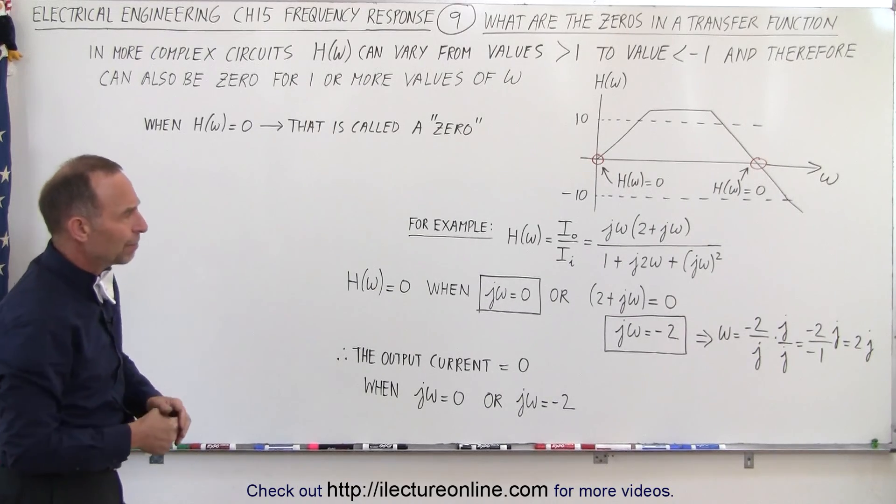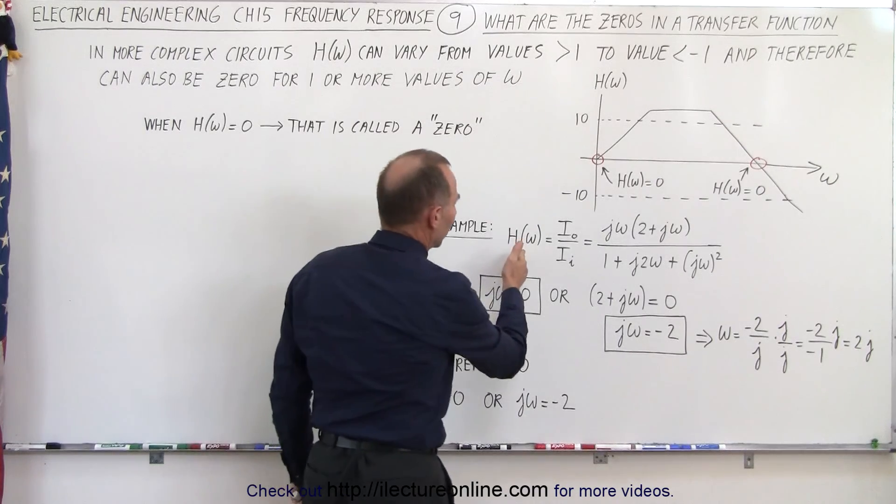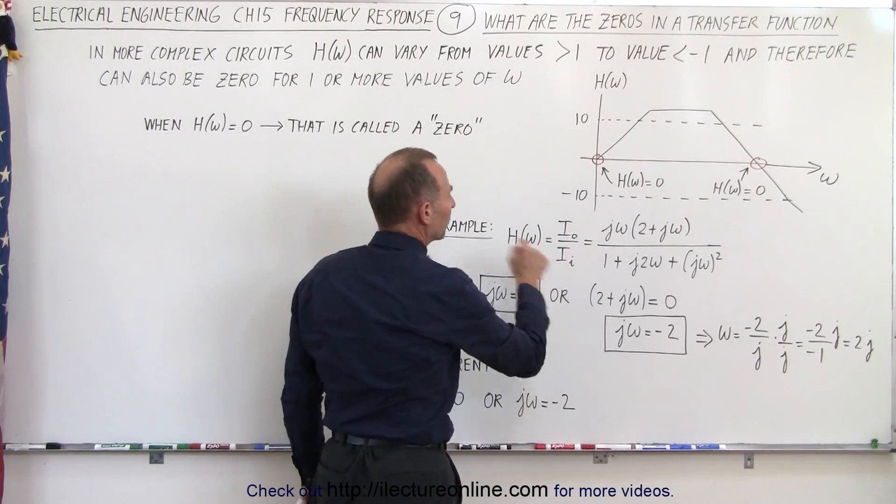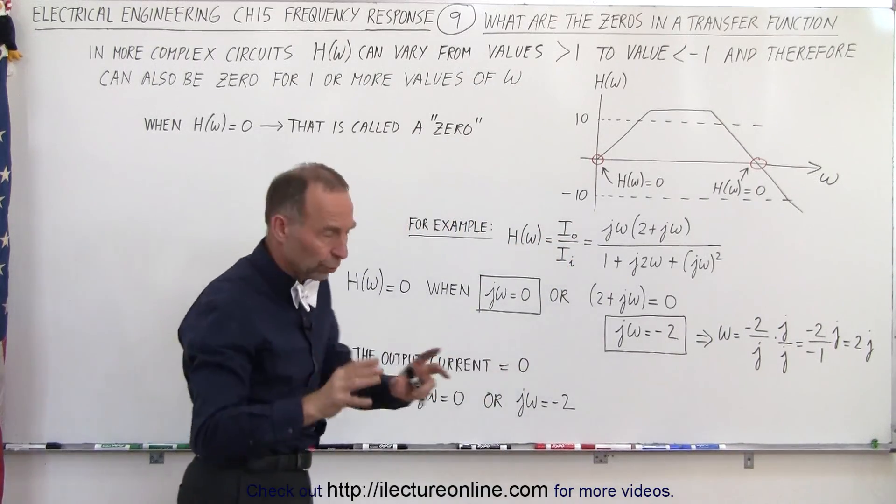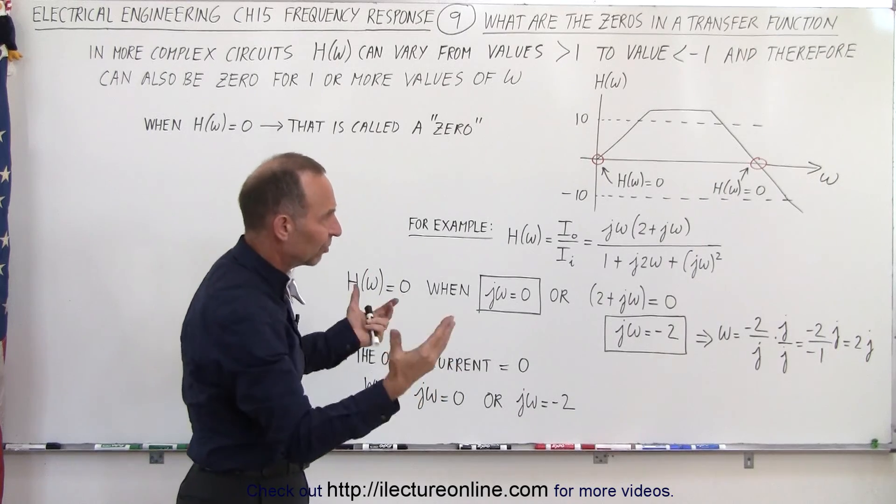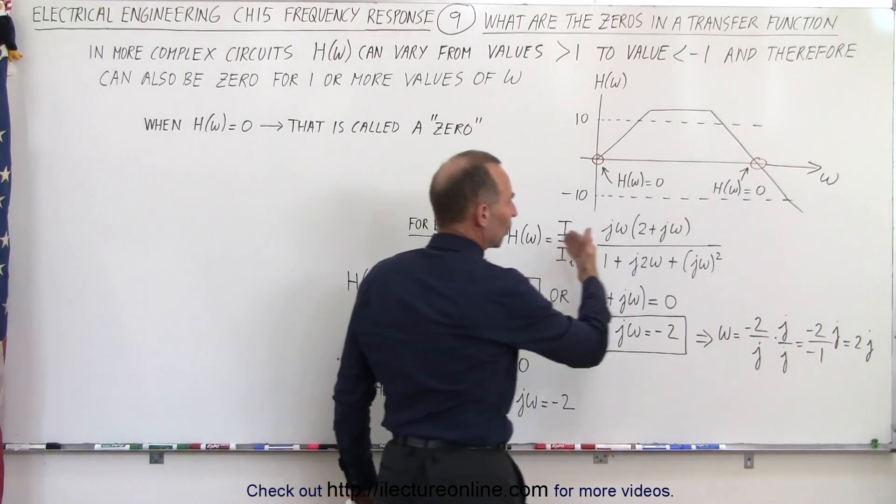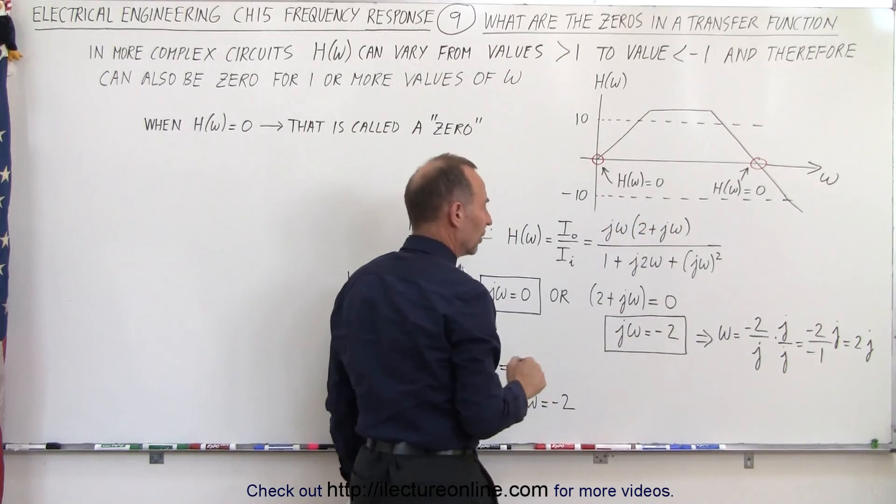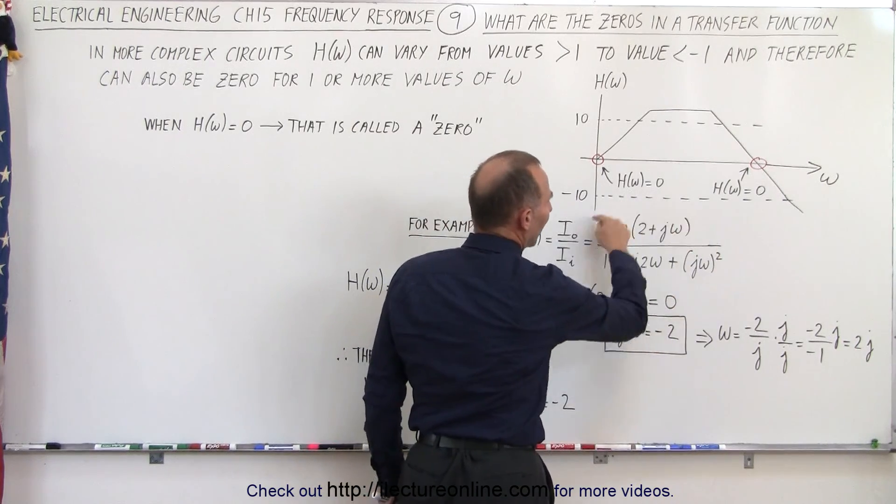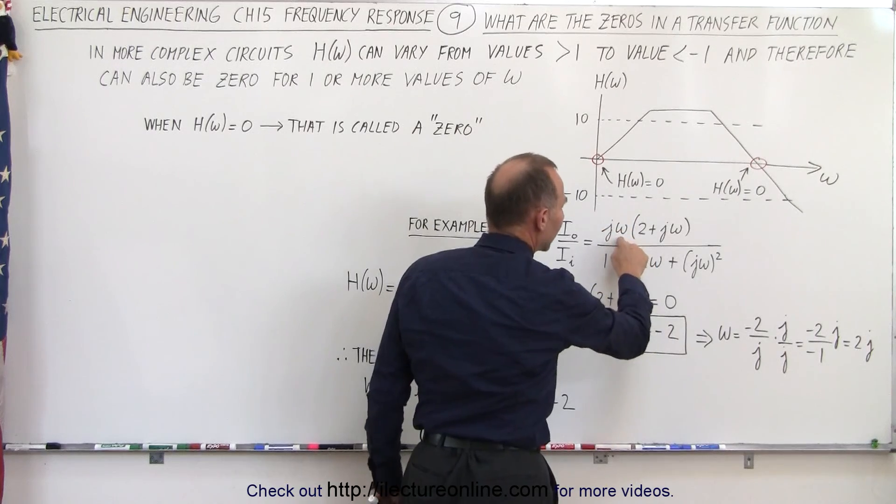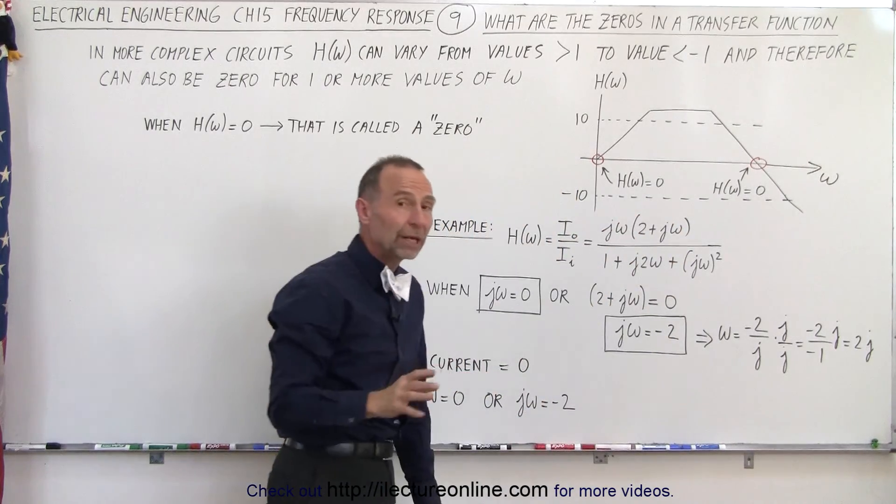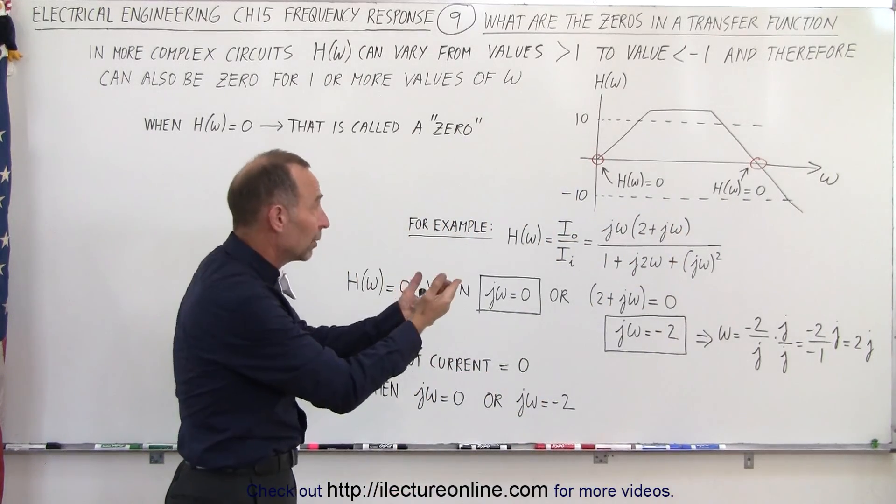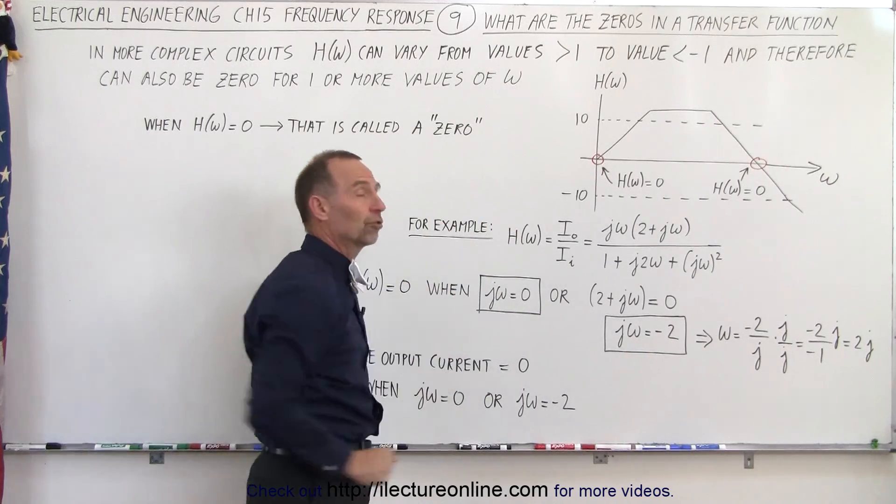Now, as an example, we could have a transfer function that indicates the output current to the input current. Later on we'll show you what that circuit looks like, but let's say for a moment that this is what the equation looks like. That's the output over the input current. Are there some specific values of omega that can make the numerator equal to 0? Because if the numerator equals 0, then the transfer function equals 0.